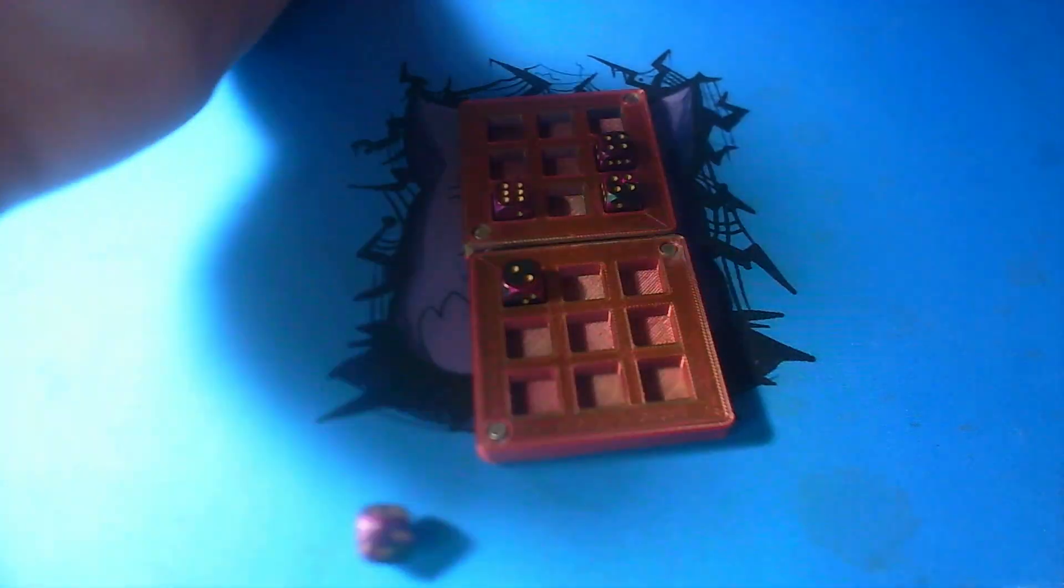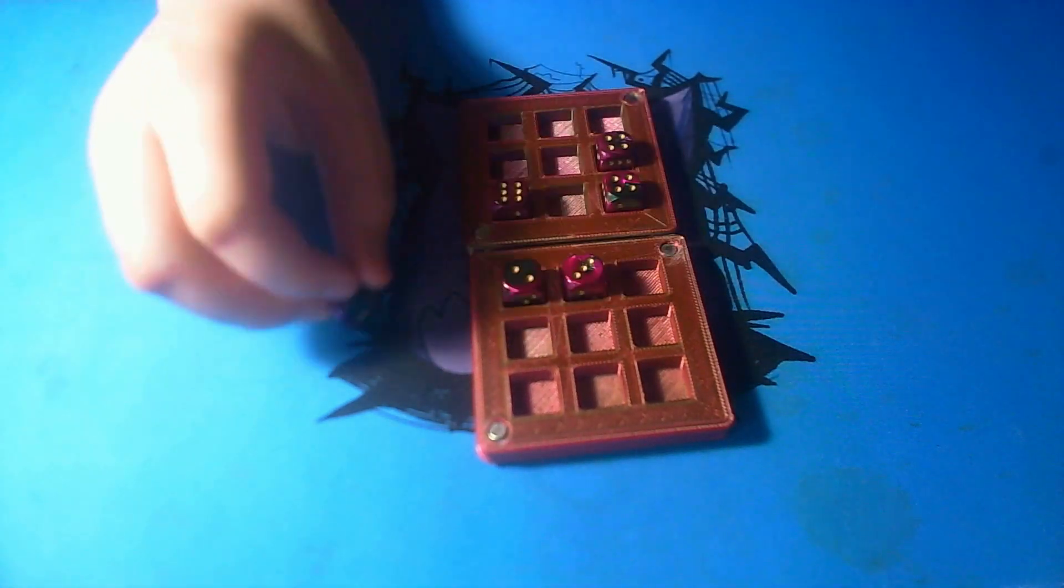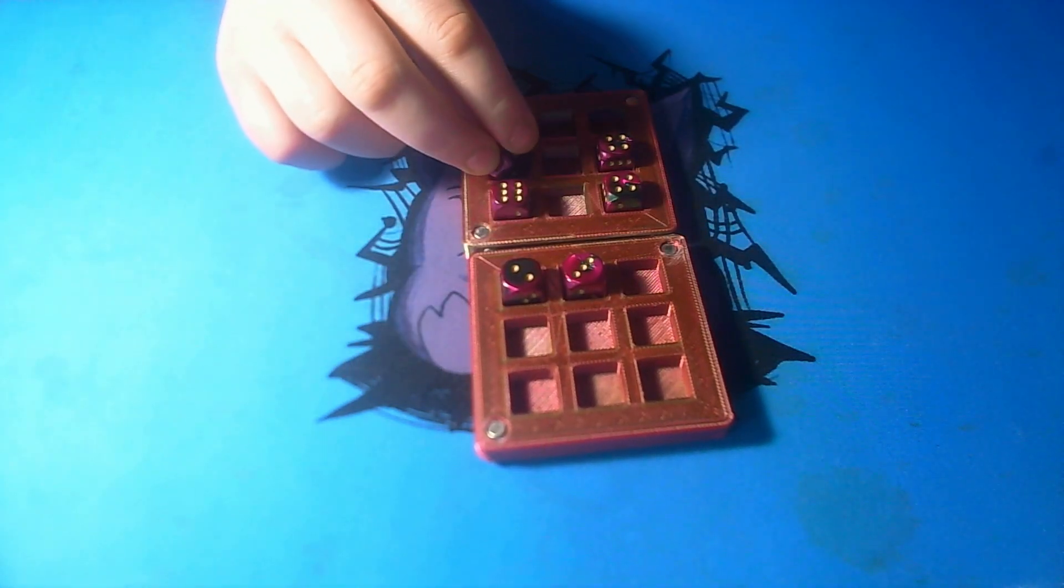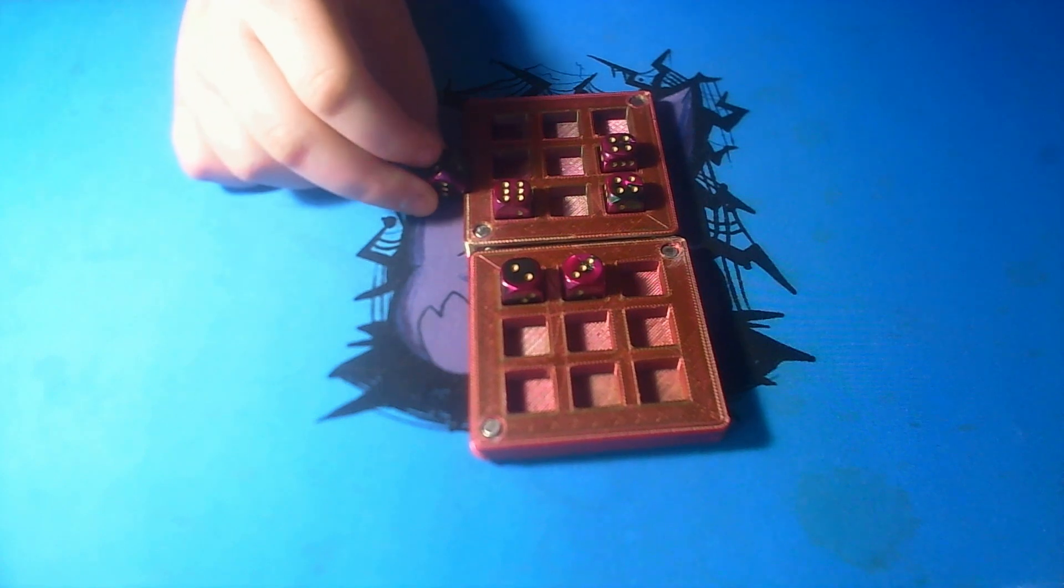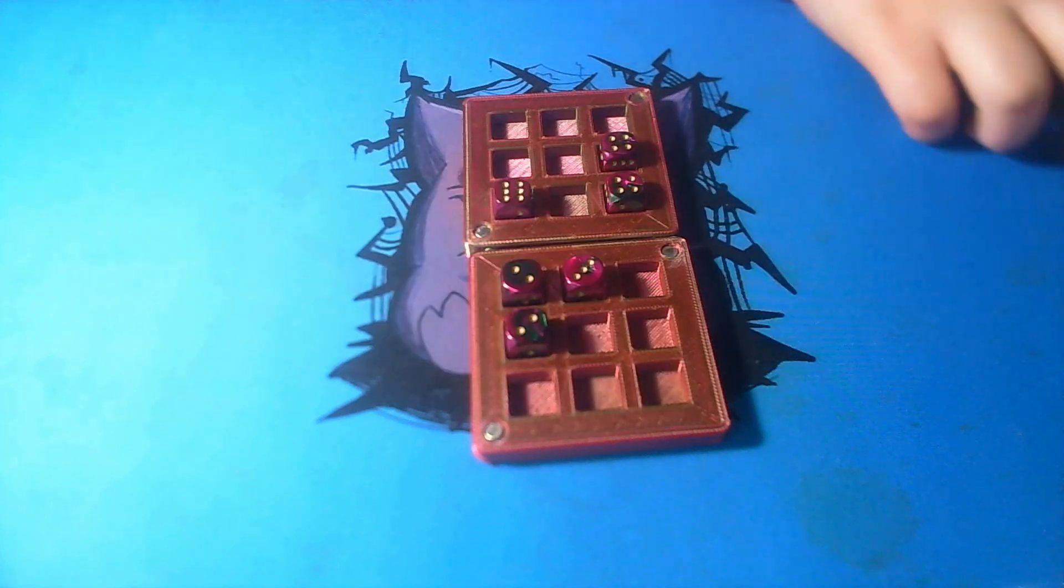And then you roll. It's a 3. You place that there. It's a 2. If it lands horizontally on one of these, just re-roll it. It lands anywhere other than the place you're rolling. It's a 2, you place that there.